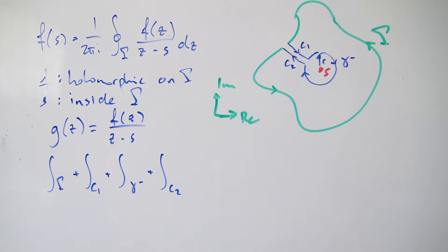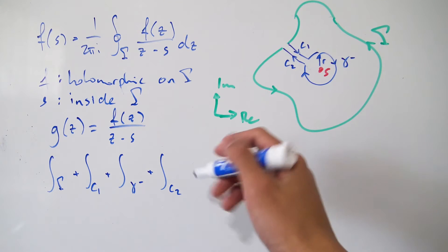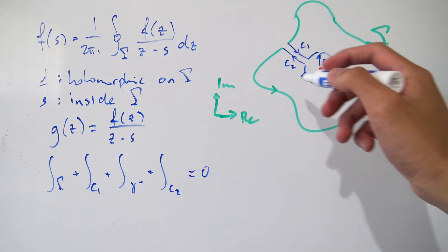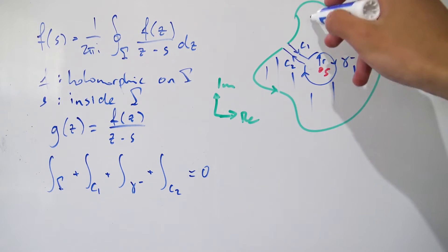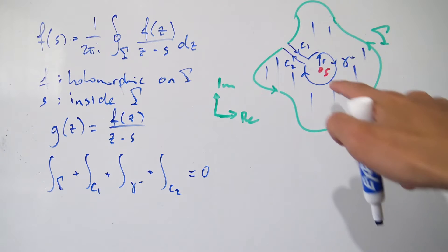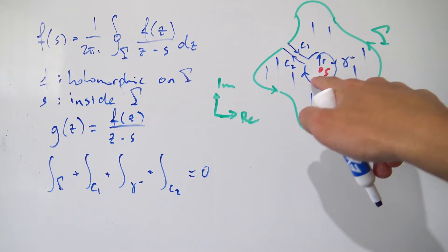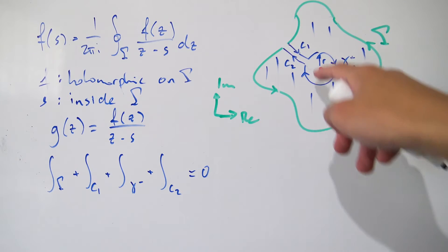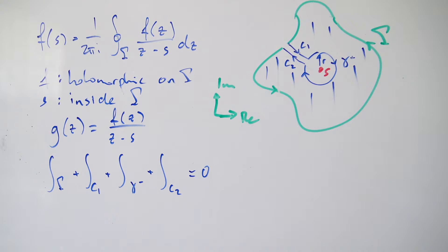The sum of all these path integrals is actually exactly zero by Cauchy's integral theorem. Because when we integrate g(z) along this combined path, the region enclosed is completely analytic — we're avoiding the singularity at s. So we're avoiding this singularity, and the contour integral along this new combined path will be exactly zero. Once we have this, we can take the limit as c1 and c2 approach each other.